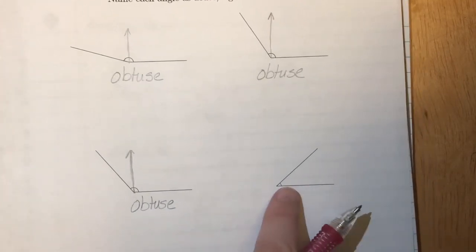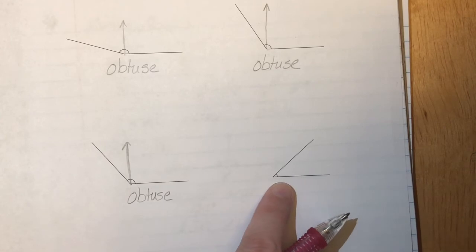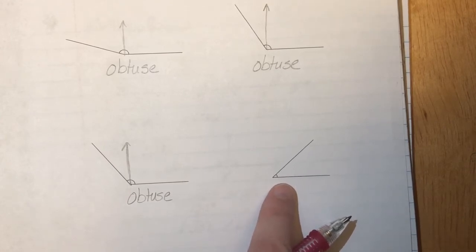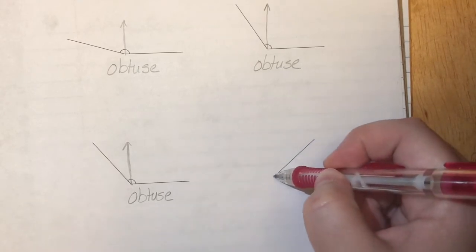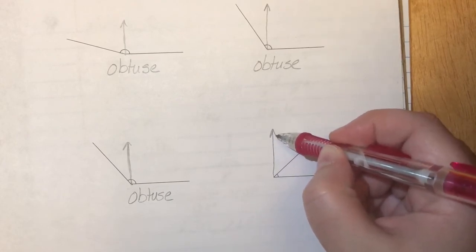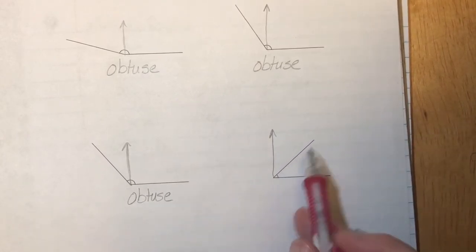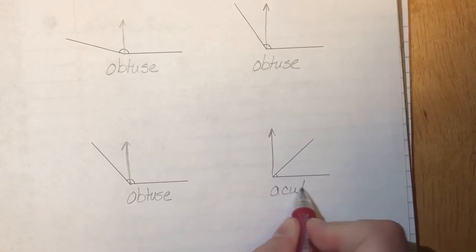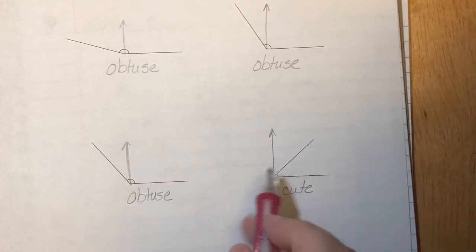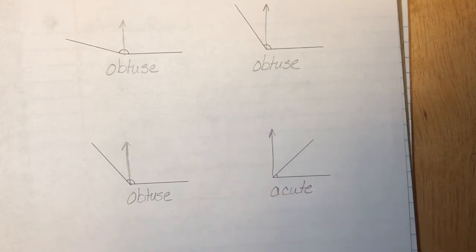Take a look at this one. See if you can figure out whether this is a right, an acute, or an obtuse angle. If I draw in that right angle. Now you see this time we're smaller. So this is an acute angle. Acute little angle. It's smaller than that 90 degrees.